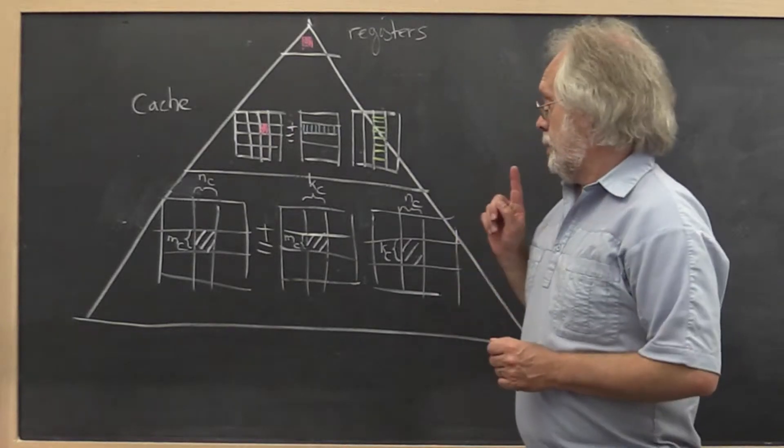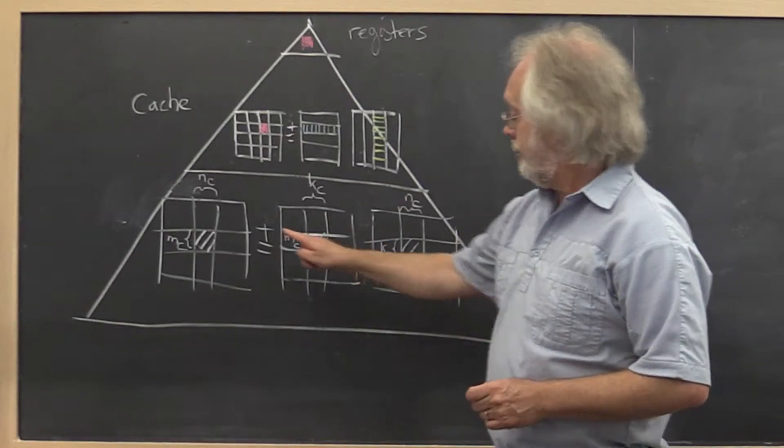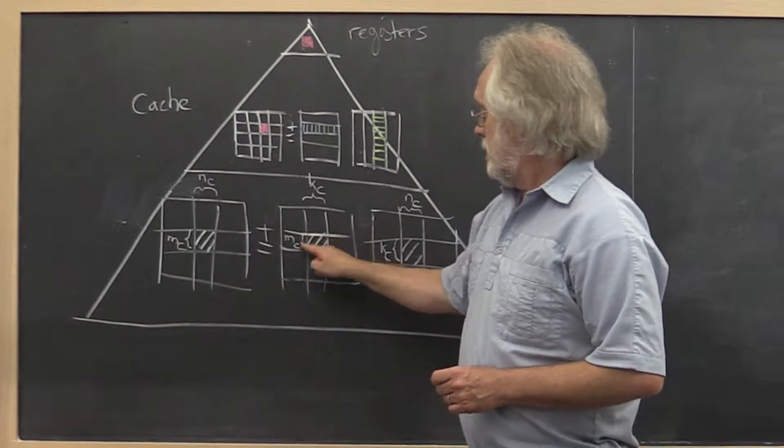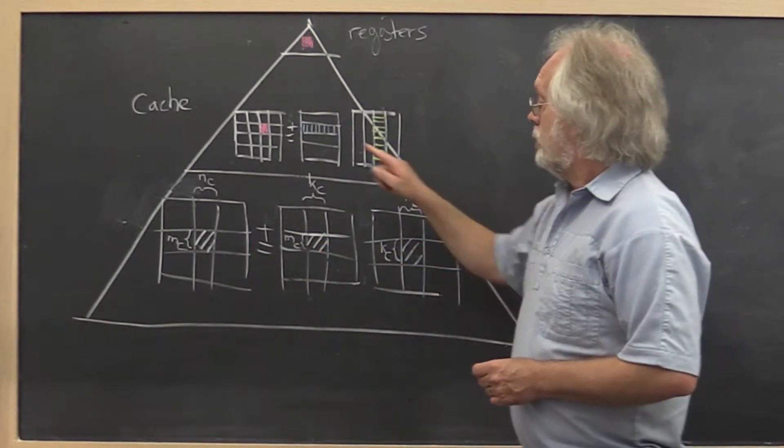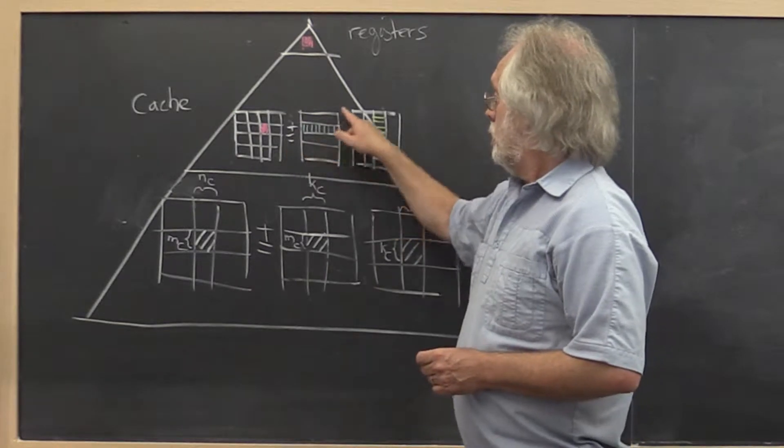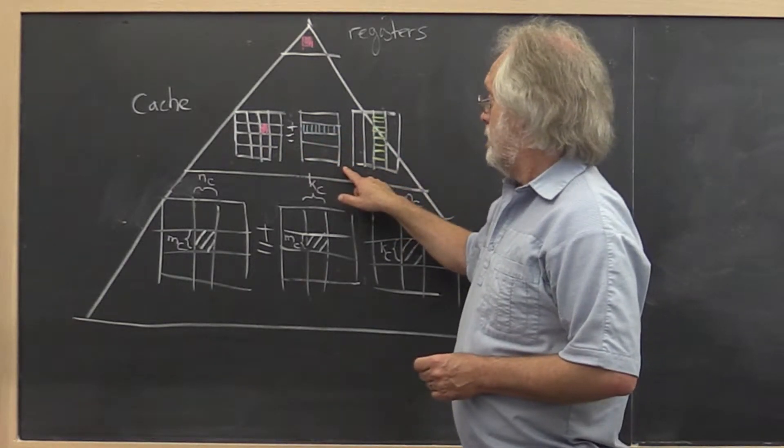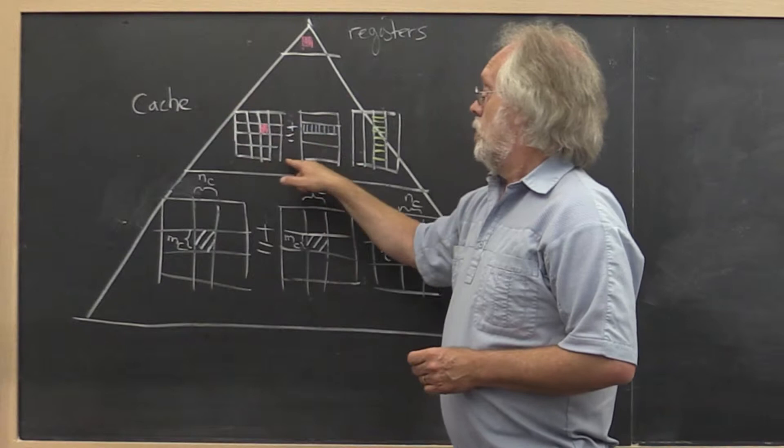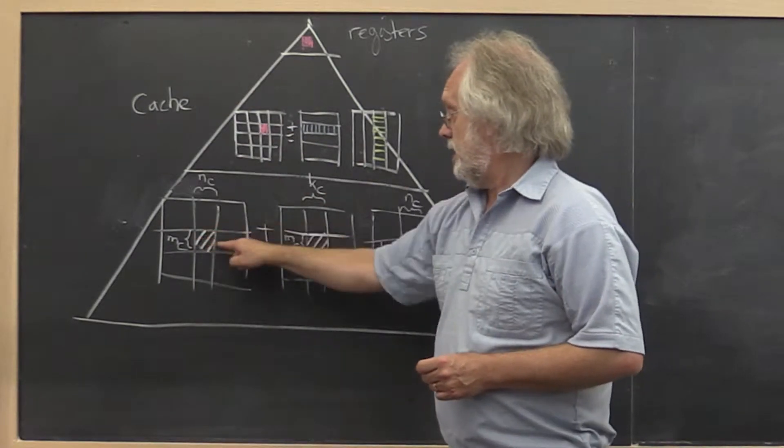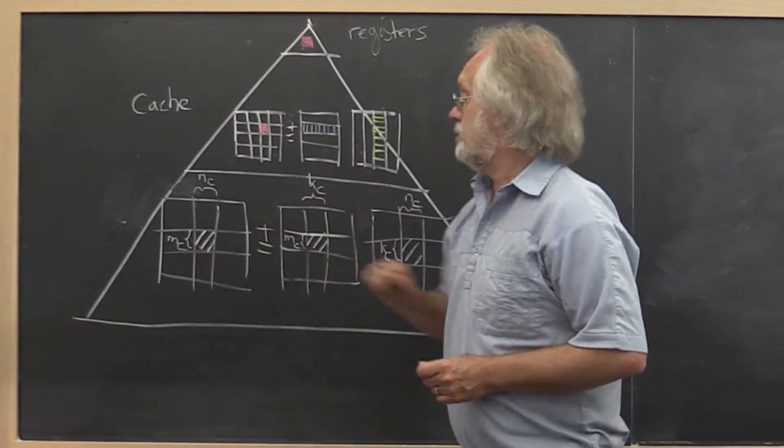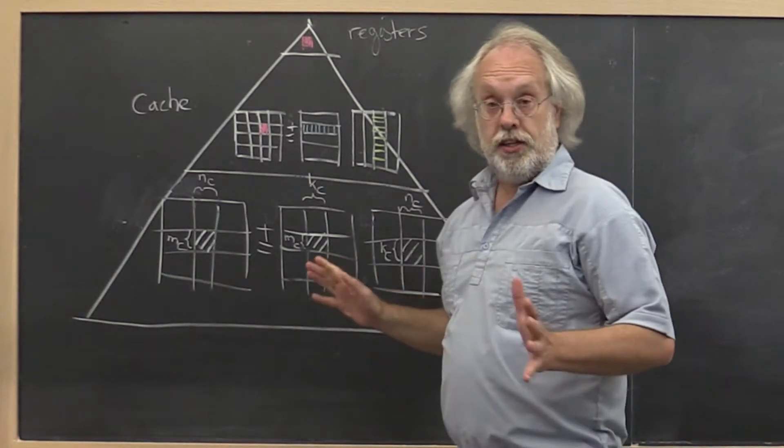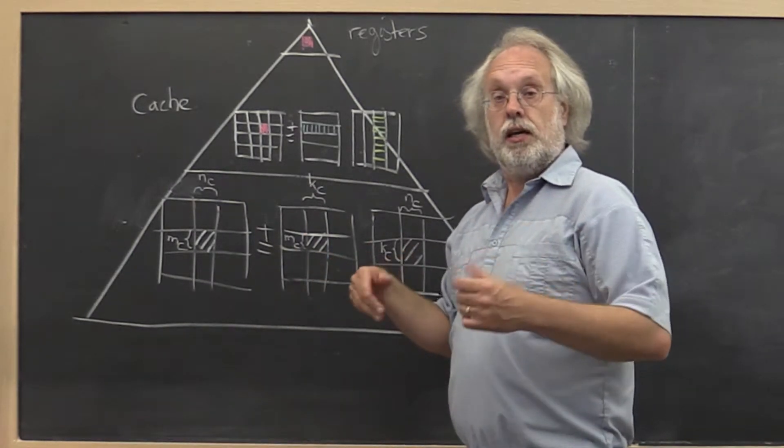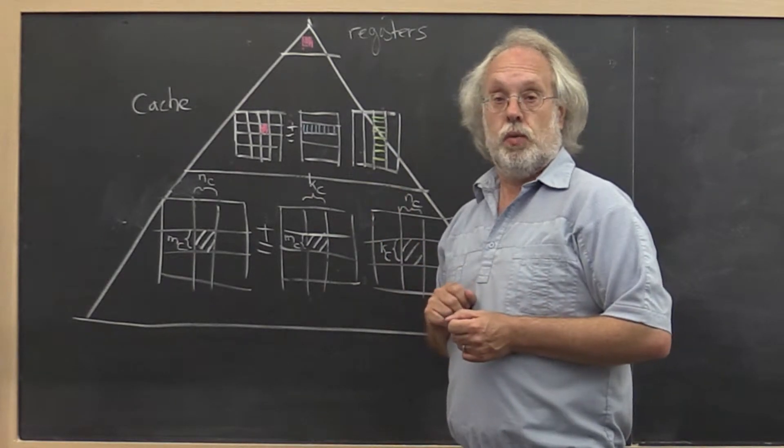In the next animation, what we're going to do is focus on one of these matrix matrix multiply with blocks. And we're going to examine all of the computations that are required to update all of the elements in that block of C. And let's have a look at that, and then we'll come back and look at what conclusions we can draw from that.